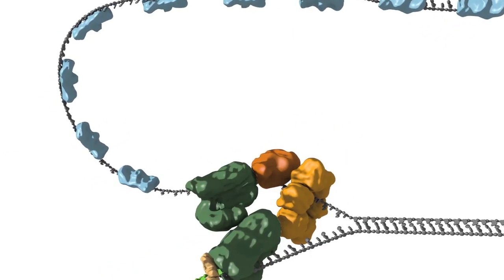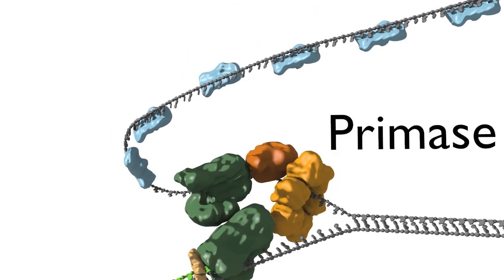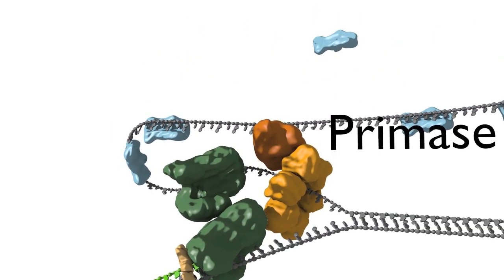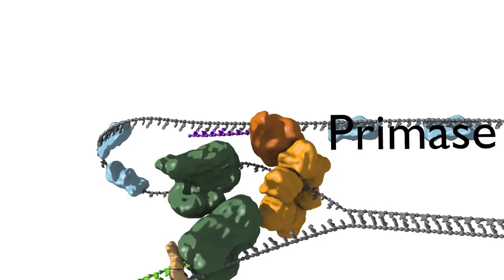While this maturation is occurring, the primase enzyme that is also travelling with the fork as part of the replisome initiates a new RNA primer on the lagging strand.